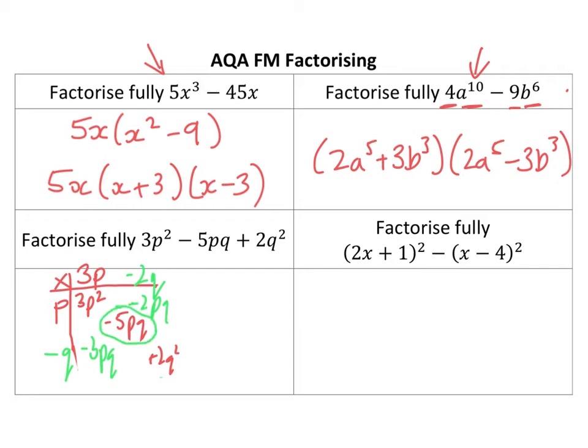So I'm going to write my answer out as 3p minus 2q, I'm going to have to write the other bracket underneath unfortunately, p minus q. There are other ways of doing it where you can bring out factors.